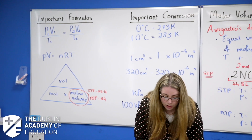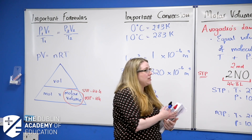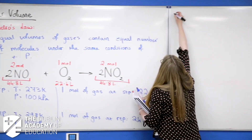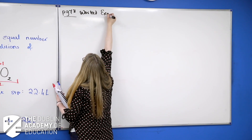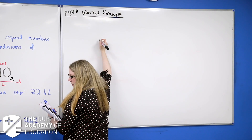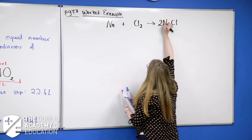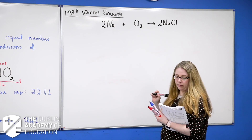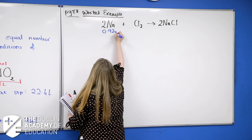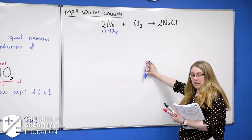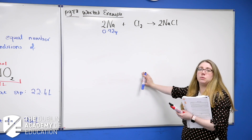Let's go through the worked example on page 78. How do I know I need to use this? We're told sodium reacts with chlorine to form sodium chloride. Calculate the minimum volume of chlorine in litres needed to react completely with 0.92 grams of sodium at RTP. You're asked for volume and told RTP — straight away you can use the molar volume triangle and don't need the more difficult method of PV = nRT.